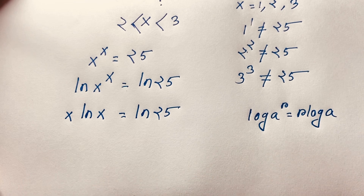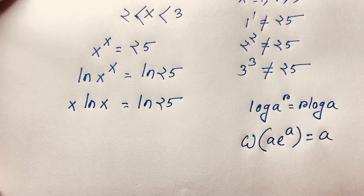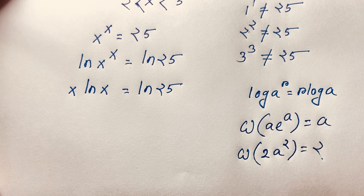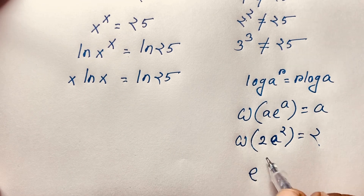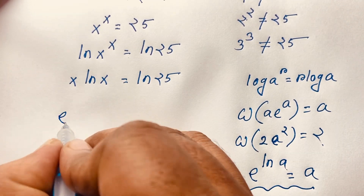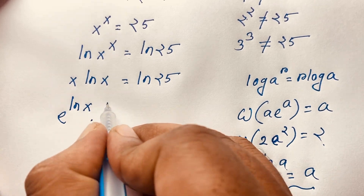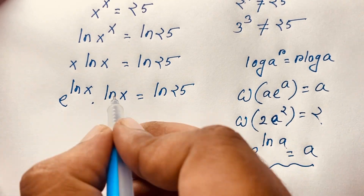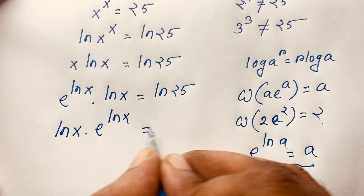Now, at this moment, I want to use the Lambert W function. The Lambert W function satisfies W(a·e^a) = a. We also know that e to the power ln a is equal to a. So this x can be written as e to the power ln x. Therefore, x times ln x becomes e to the power ln x times ln x, which is equal to ln 25. Rearranging, it will be ln x times e to the power ln x is equal to ln 25.